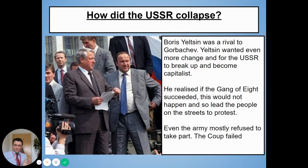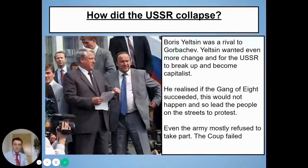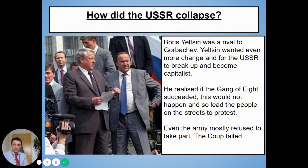Boris Yeltsin was a rival to Gorbachev who wanted Gorbachev to go even further. Yeltsin wanted the USSR to break up and become fully capitalist — he felt Gorbachev was acting too slow and wanted communism gone completely. Yeltsin realised that if the Gang of Eight succeeded and undid all of Gorbachev's work, what Yeltsin wanted would never happen. So Yeltsin led the people onto the streets to protest against the Gang of Eight. Even the army started to refuse to take part — they refused to shoot fellow Russians. The Gang of Eight had no real power, the coup failed, and most of them either killed themselves or were arrested.